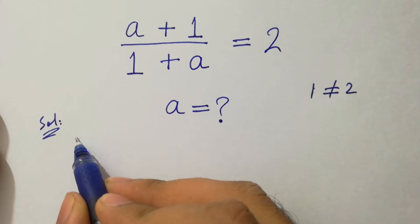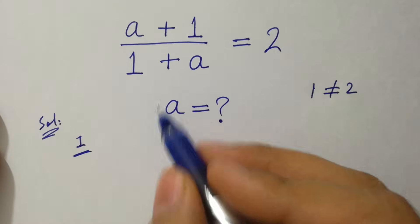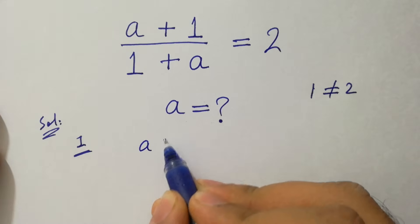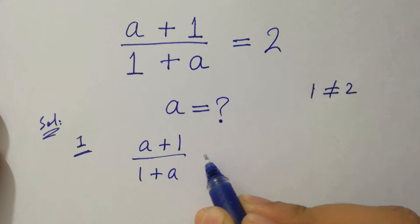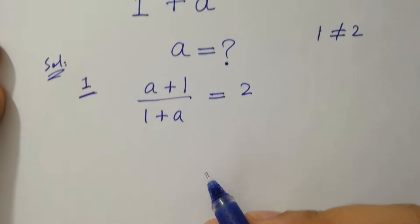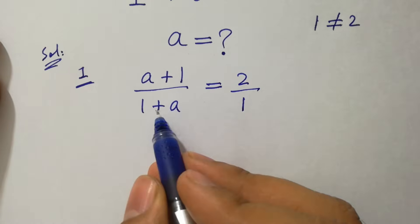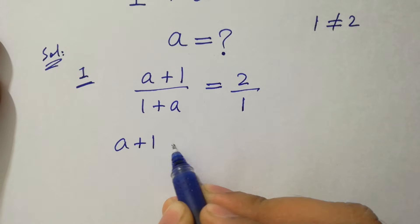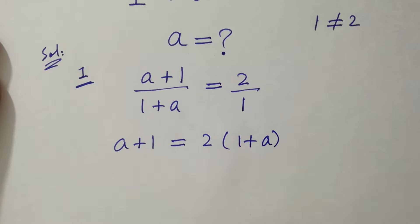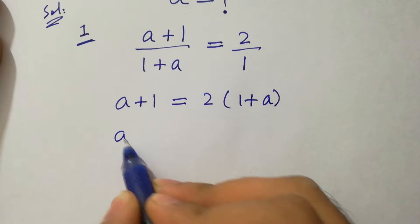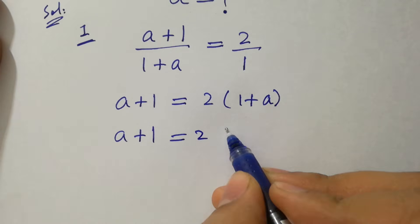Let's take the first method to solve this problem. We have (a+1)/(1+a) = 2. By cross multiplication, we have a+1 = 2 times (1+a), which gives us a+1 = 2 + 2a.